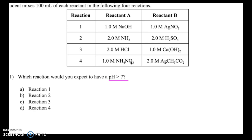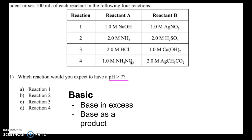I need a reaction where at the end I have a basic solution, meaning there's base in there. There are two cases where I can have base at the end of a reaction. The first is if one of my reactants is a base and that reactant is in excess — if base is the excess reactant, it's left over at the end, making the resulting solution basic, pH greater than 7. The second case is if I made a base — if one of my products was a base.